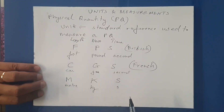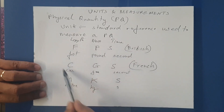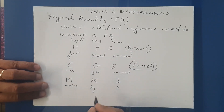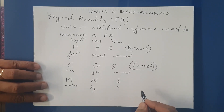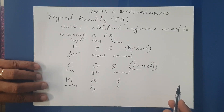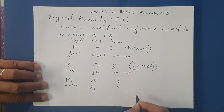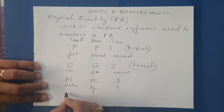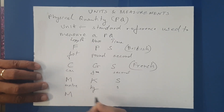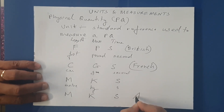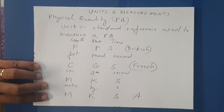Later on, one more fundamental physical quantity which could not be derived from these three was discovered — that was electric current. Electric current was a fundamental quantity and its unit was ampere. So we have one more new system of units: meter, kilogram, second, ampere — the MKSA system.